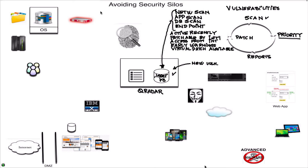Another advantage is that because QVM is sitting on a SIEM that looks at flows as well as logs, we can detect attempted exploitation of a particular vulnerability, which is very significant. You can actually say: show me the ones that people are really trying to break into, and direct your attention and priority to those.